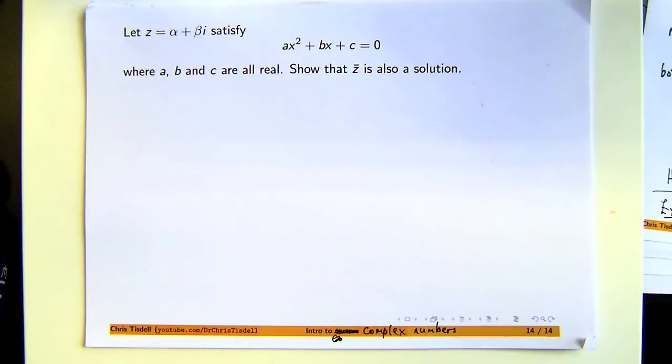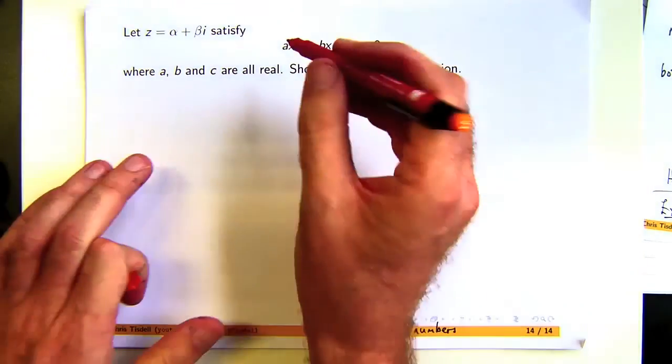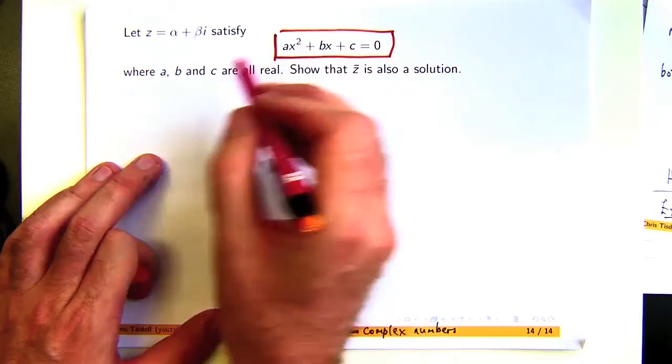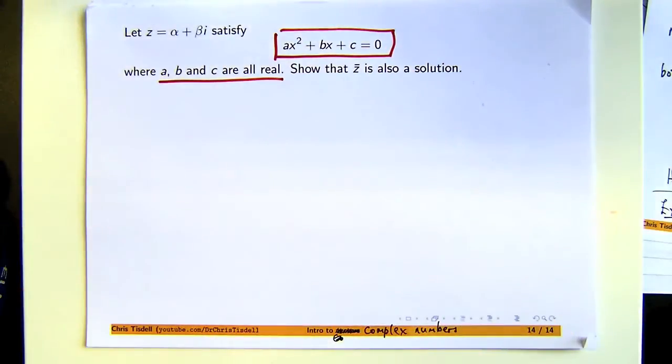Here's a problem from complex numbers. We're given a quadratic equation where the coefficients, the a, b, and c, are all real numbers.